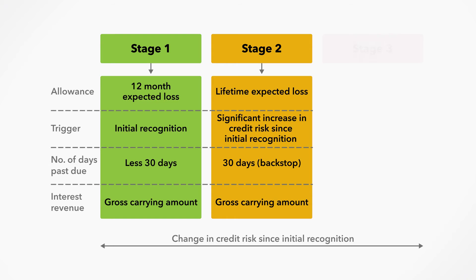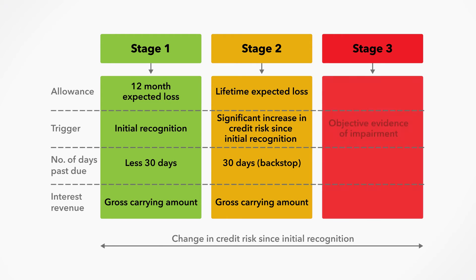Loans are placed in stage 3 when there is objective evidence of impairment. A loan is presumed to be in stage 3 if it is more than 90 days in arrears. The required allowance for ECL is the expected loss over the lifetime of the loan. Interest revenue is recognized on a net basis, not the gross basis used in stages 1 and 2, reflecting an effective interest rate rather than the contractual interest rate.